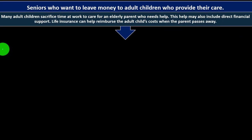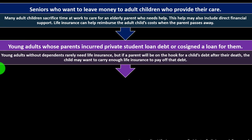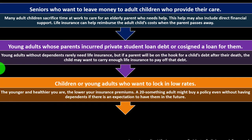Seniors who want to leave money to adult children who provide their care: many adult children sacrifice time at work to care for an elderly parent, and this help may include direct financial support. Life insurance can help reimburse the adult child's costs when the parent passes away. Also, young adults whose parents incurred private student loan debt — if a parent will be on the hook for a child's debt after their death, the child may want to carry enough life insurance to pay off that debt.